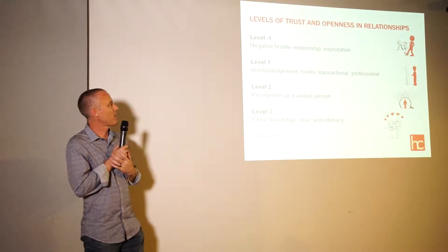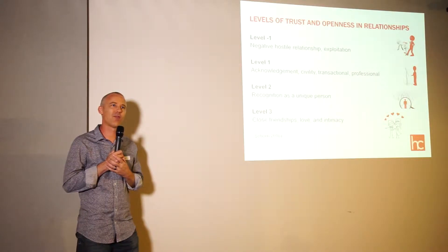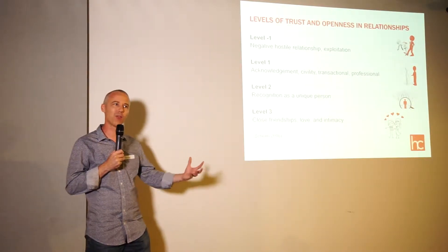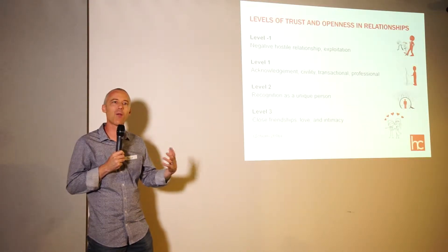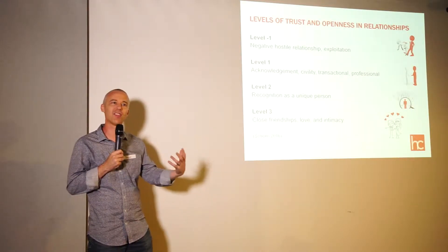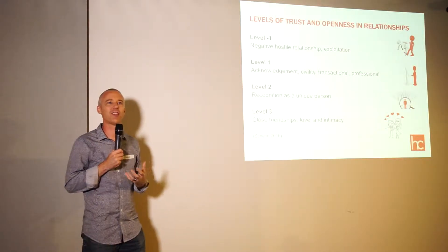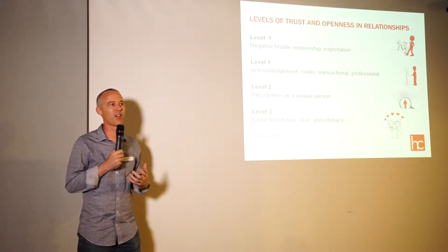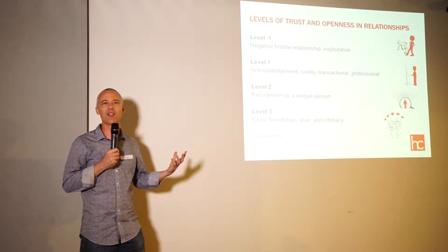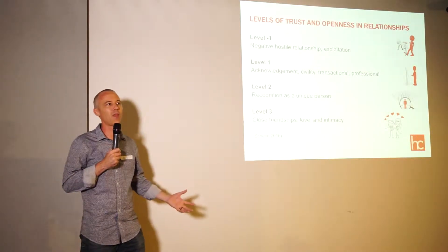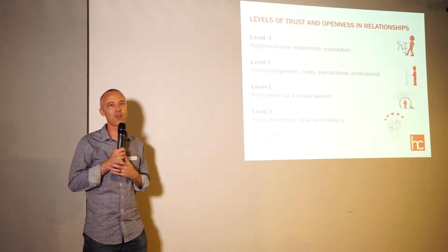Then there's a level one relationship around acknowledgement, civility, and a transactional process — you're respectful to a point, you bring people together to co-design something, but you might not have seen them before and might not follow up again. A level two relationship is about recognising someone as a unique person. For me, if we're going to involve community members in co-design, it's level two we need to reach. We need to understand people, understand their lives, and understand what will help them participate on equal terms before we even invite them into the room.